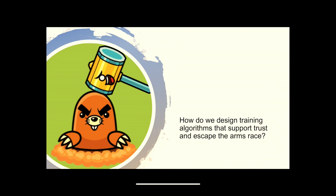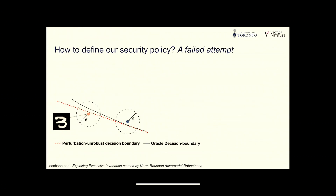Next, I'd like to discuss how we can design training algorithms that provide trustworthy machine learning and escape this arms race. I'll start with a failed attempt to capture how difficult the problem is. When we tried to build models that recognize handwritten digits — a seemingly simple problem — it turns out these models, like many machine learning classifiers, are very vulnerable to small perturbations of their inputs called adversarial examples.